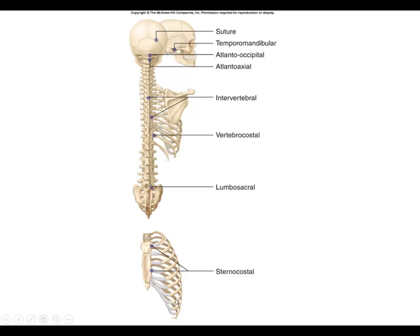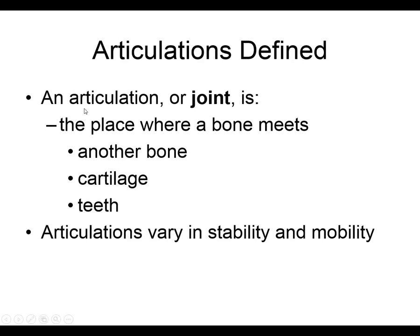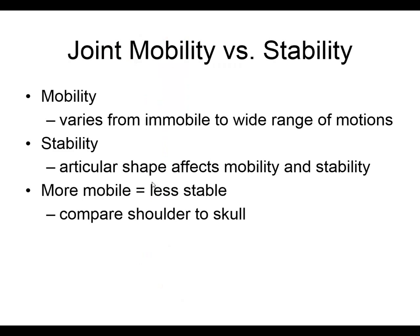Here is an example where a bone is not really separated from another bone — you can see there is a really long cartilage. We consider that a bone articulating with a cartilage. So the classification can include a bone meeting a cartilage, which would also be considered a joint. There is an inverse correlation between the mobility and the stability.